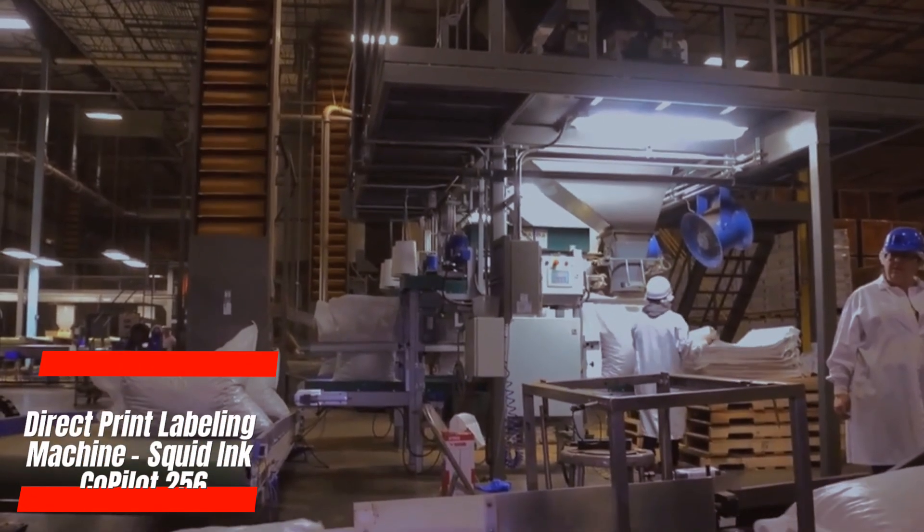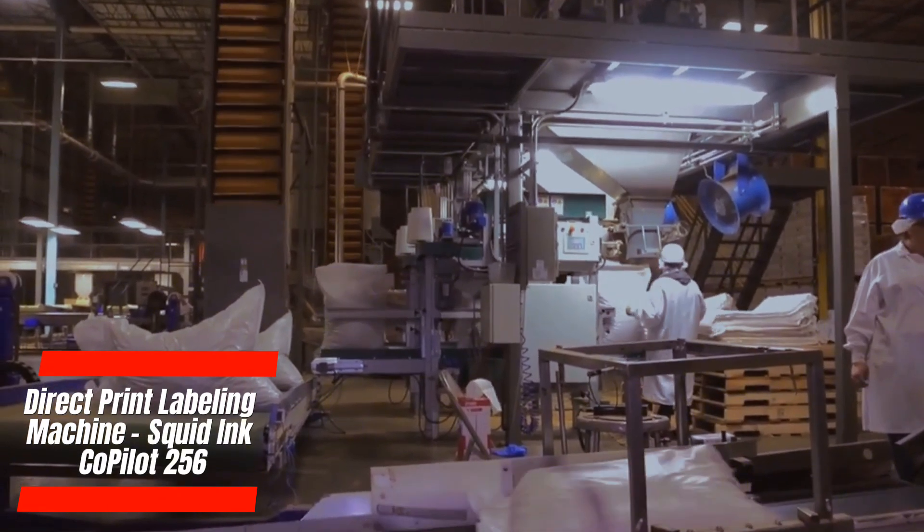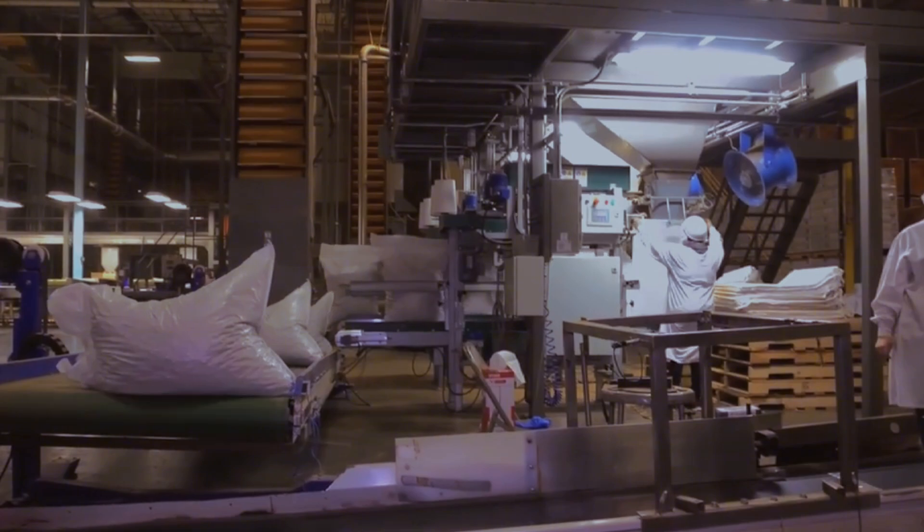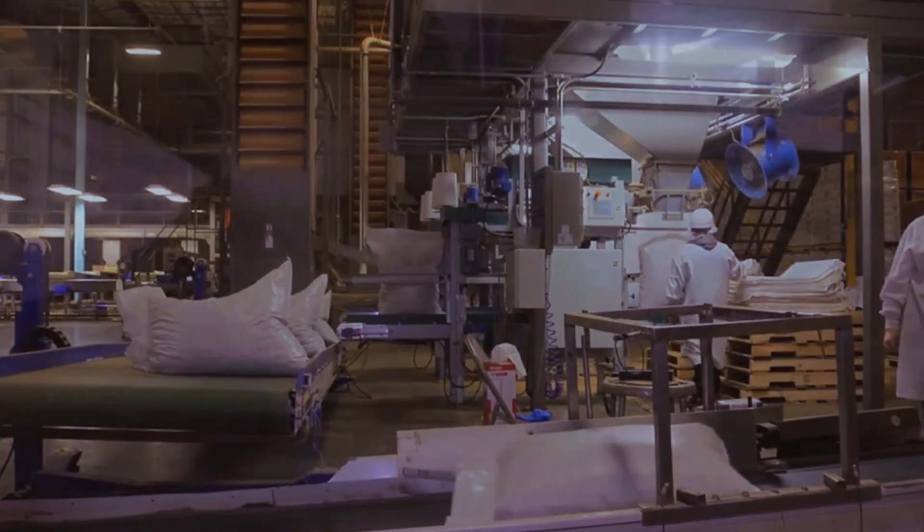The Squid Ink Co-Pilot 256 sets a new standard for direct printing labeling with its advanced inkjet technology. This machine offers unparalleled print quality and durability, making it suitable for a variety of food packaging materials, including cardboard, plastic, and glass. Its high-resolution printhead ensures crisp, legible prints, even in challenging environments such as cold storage or humid conditions.